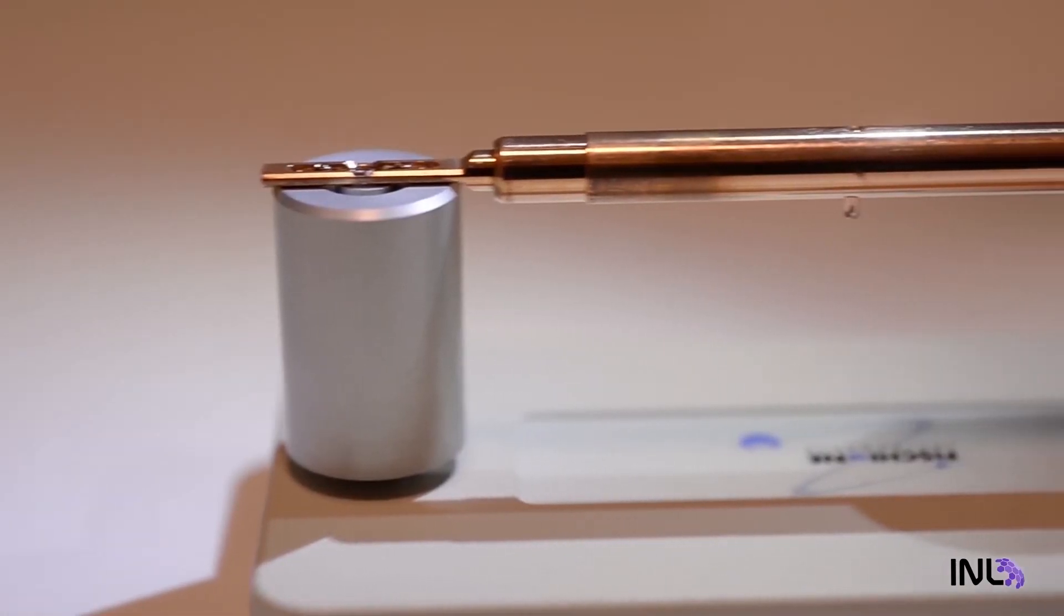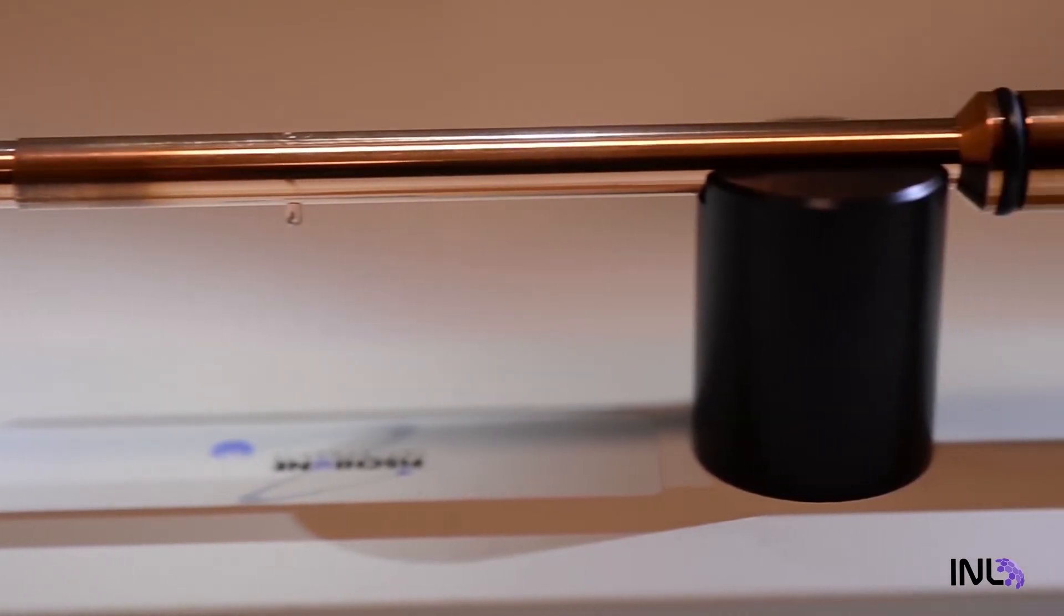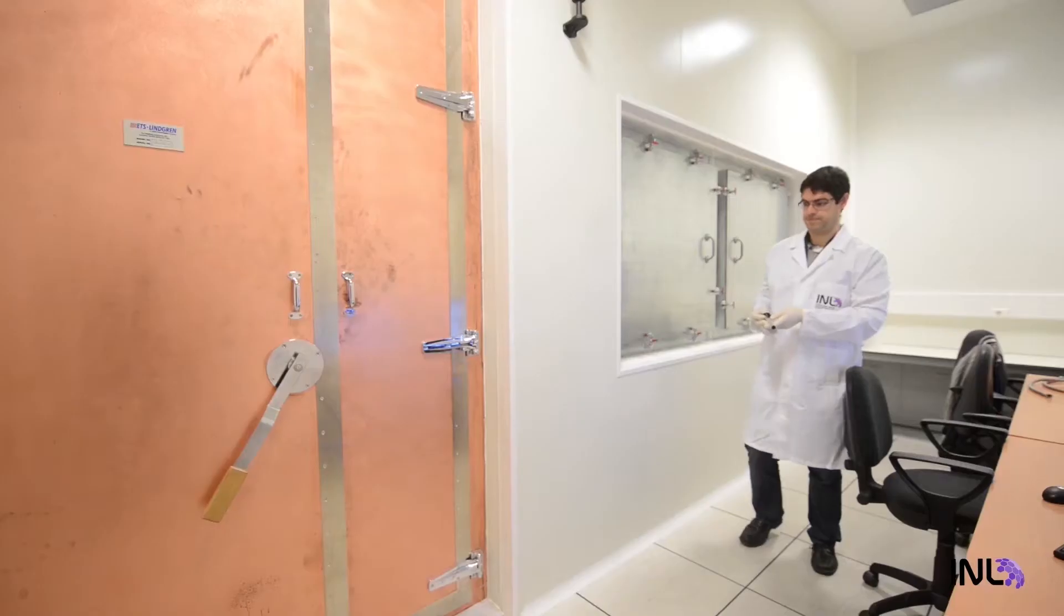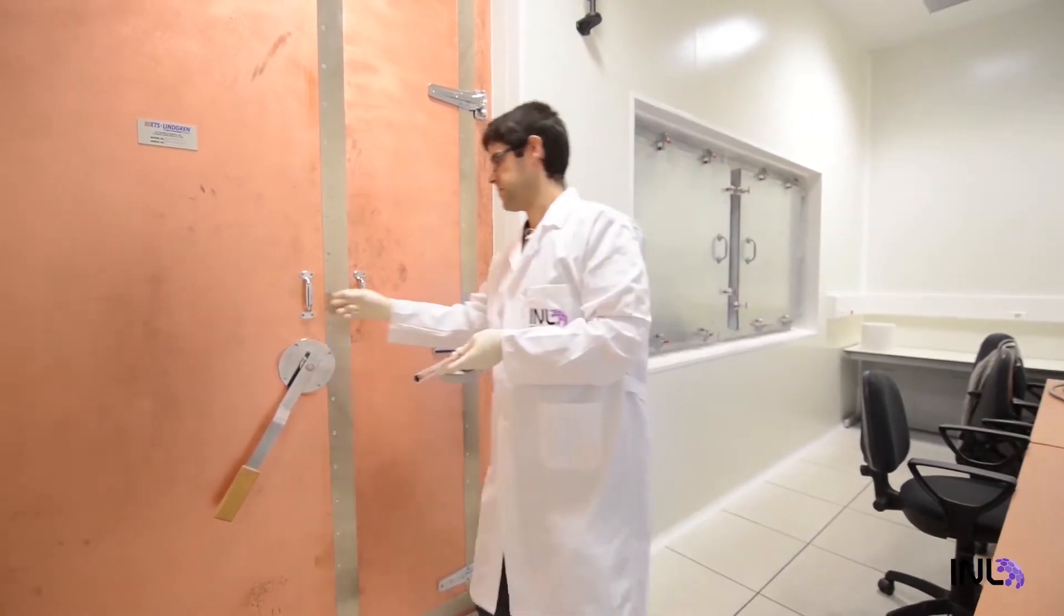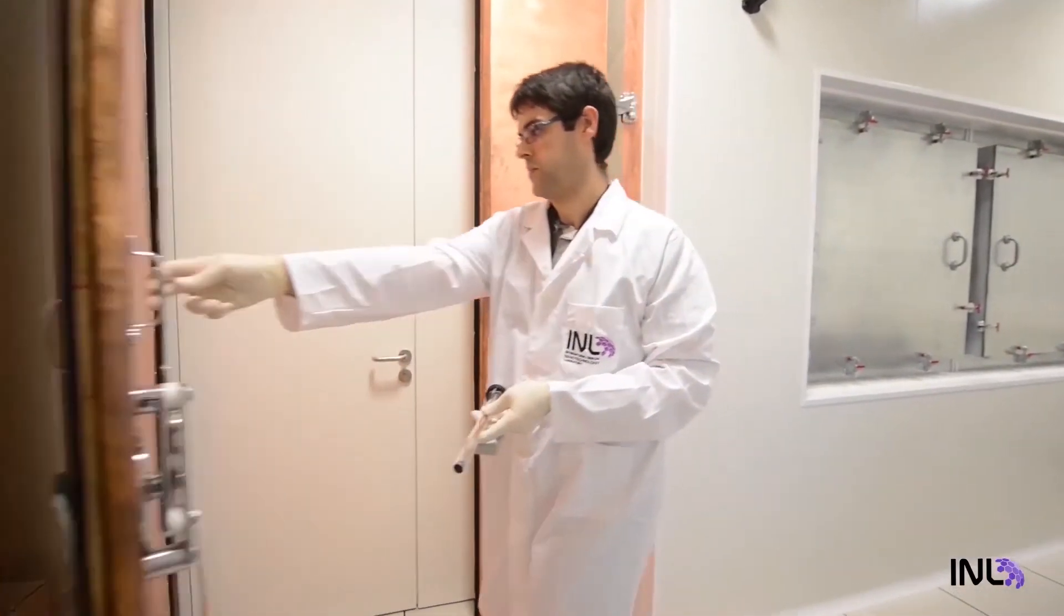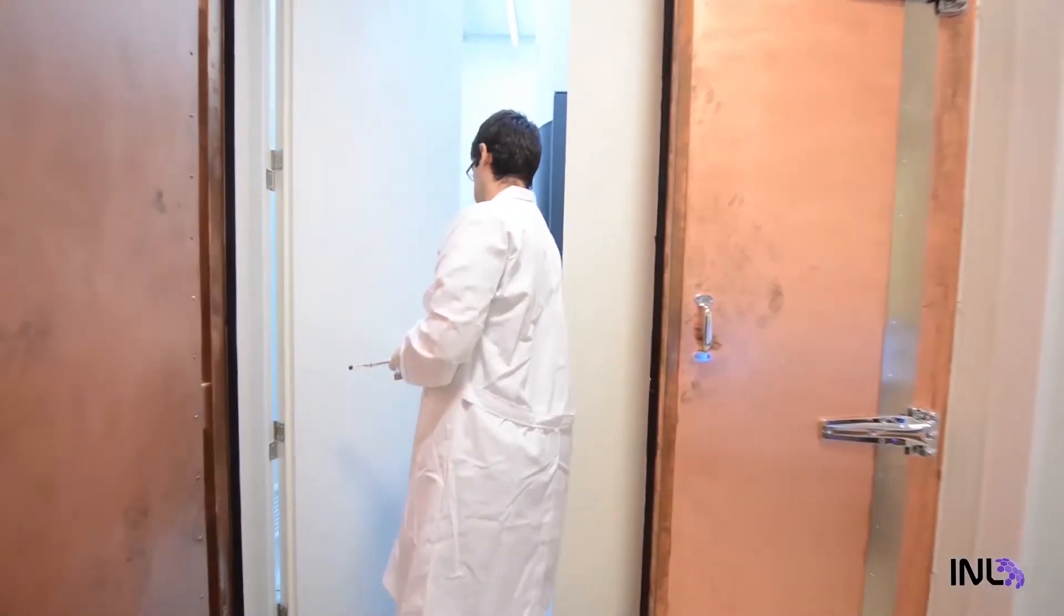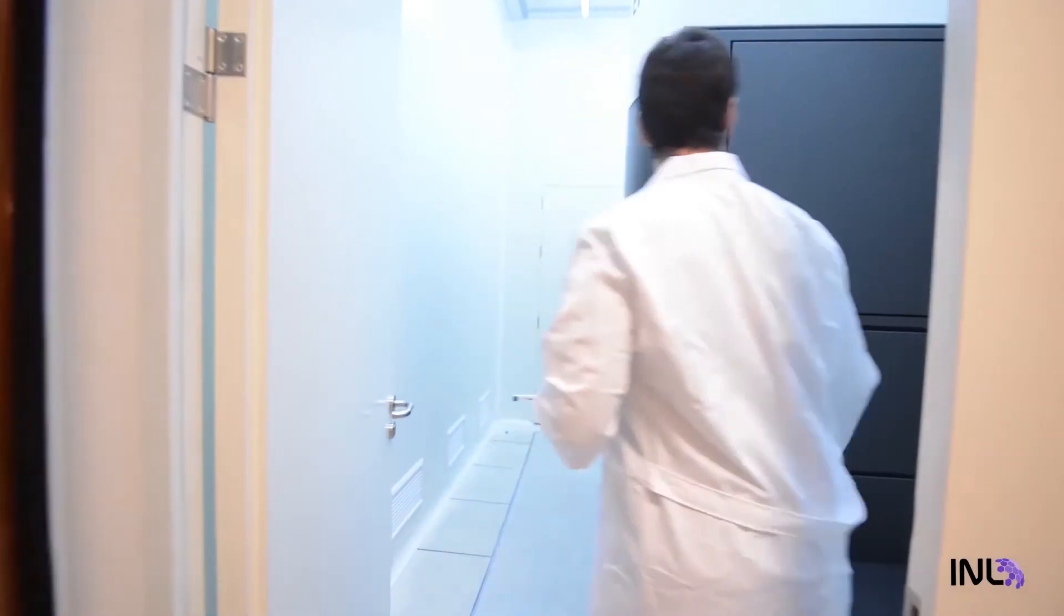To see even a finer level of detail down to the atomic level, a transmission electron microscope, or TEM, is used. These sensitive microscopes are housed in the most protected rooms in our facility and allow us to see how the atoms are arranged inside the nanoparticles.